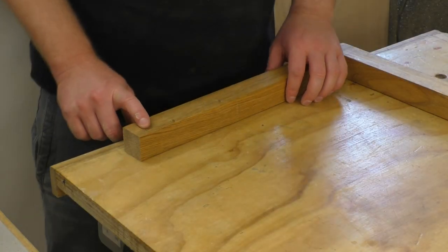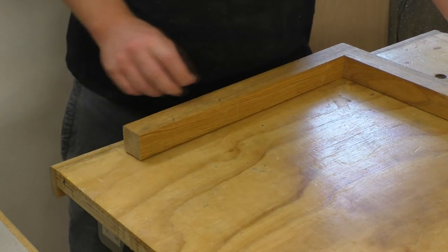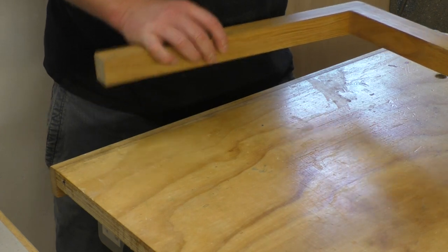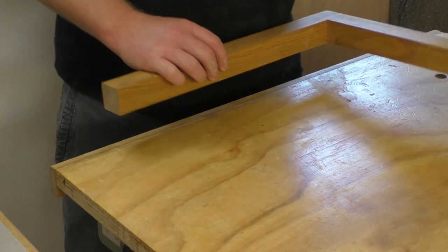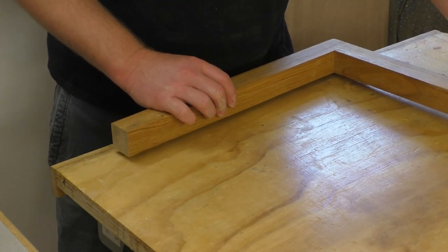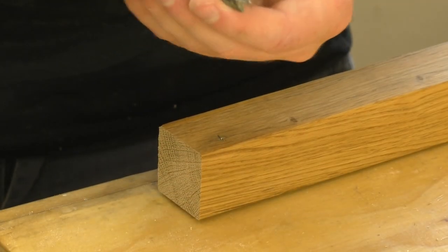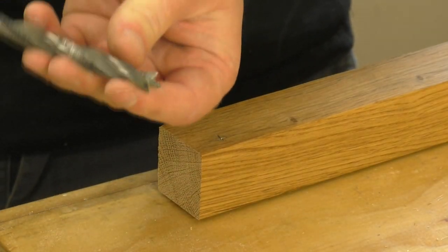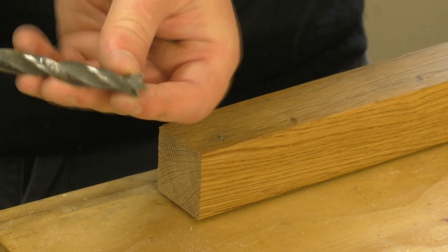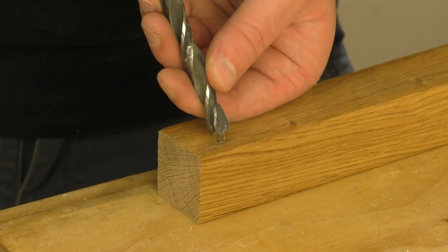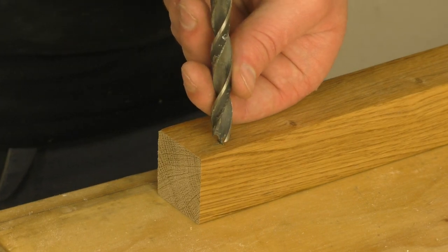I was going to drill these holes on the pillar drill, but because the pillar drill table is so small it's a little bit awkward to hold such a large frame flush with the table, so I'm going to drill them by hand instead. Unfortunately I don't have an 11 millimeter drill bit, but I do have a 10 millimeter one, and this has a brad point which will allow me to center this in the hole that I made with my awl.